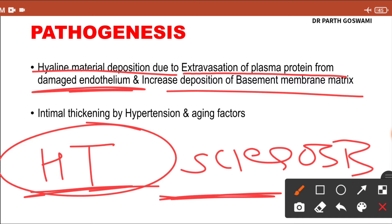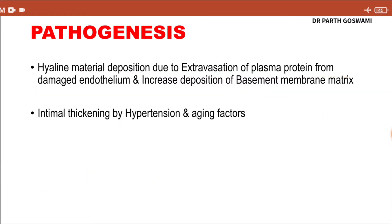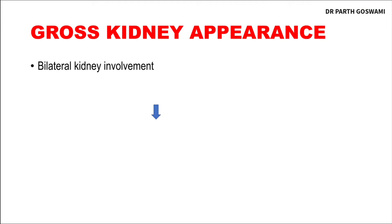Sclerosis can also be seen because of repeated trauma to the endothelium due to hypertension, and chronic inflammation can also contribute to sclerosis. There will be intimal thickening in this particular disorder, which we will discuss in detail later.